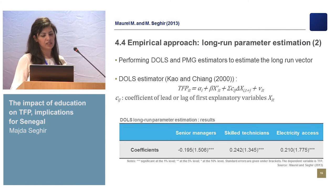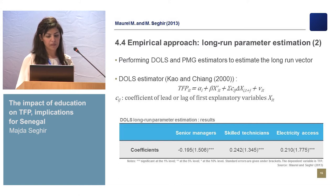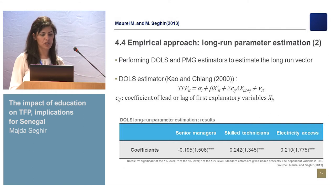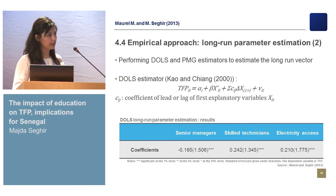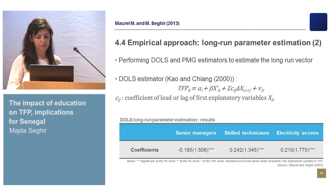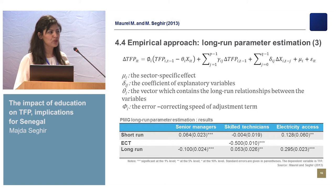The first estimator is the dynamic ordinary least squares (DOLS), and the second is the pool mean group (PMG) estimator. For the DOLS estimator, we use a regression in which we introduce lags and leads of the first-differenced explanatory variables as regressors of TFP. The results show that a 1% increase in the share of skilled technicians and electricity access raises TFP in the long run by 24% and 21% respectively. However, the impact of senior managers in the long run is significantly negative.